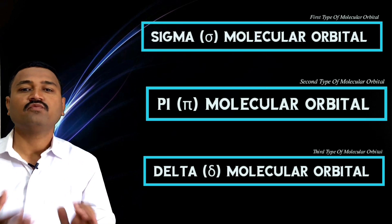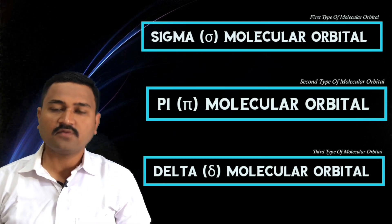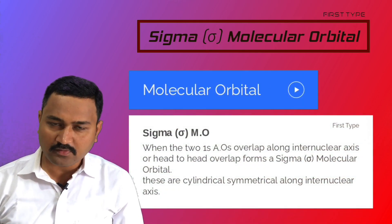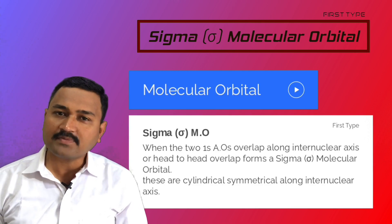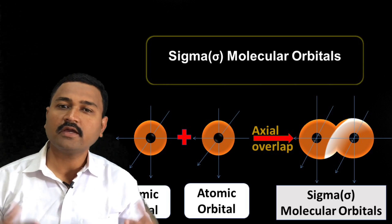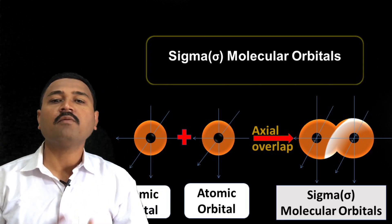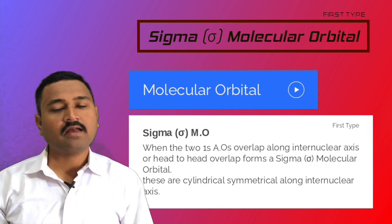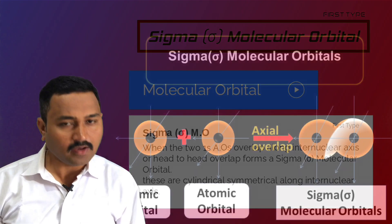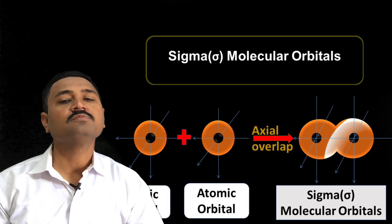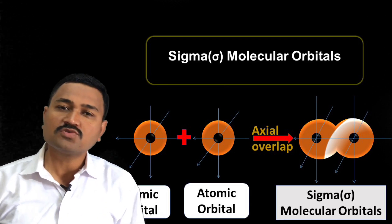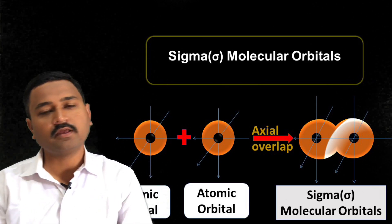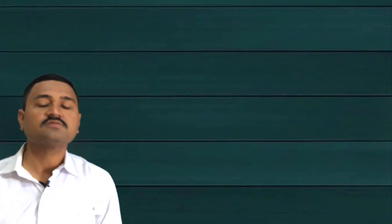Now let us know about the first type of molecular orbital, which is the sigma molecular orbital. When the two atomic orbitals of two combining atoms overlap along the internuclear axis — called head-to-head overlap or axial overlapping — sigma molecular orbitals are formed. These sigma molecular orbitals are cylindrically symmetrical along the internuclear axis, and we observe greater overlapping in them, as shown by this simple cylindrical overlapping between the atomic orbitals.